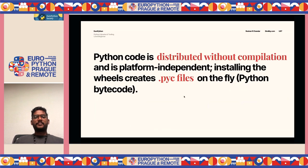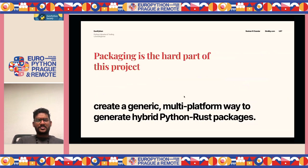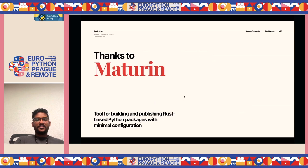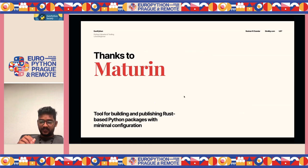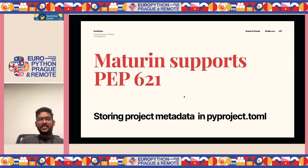There's an issue though: Python code is distributed without compilation and is platform-independent, but Rust code needs to be compiled and distributed as a shared binary. How do we tackle this obstacle? We use something called Maturin. Maturin is a tool for building and publishing Rust-based Python packages with minimal configuration. To install Maturin you just do `pip install maturin`. Maturin also supports PEP 621, so you can store project metadata in `pyproject.toml`.